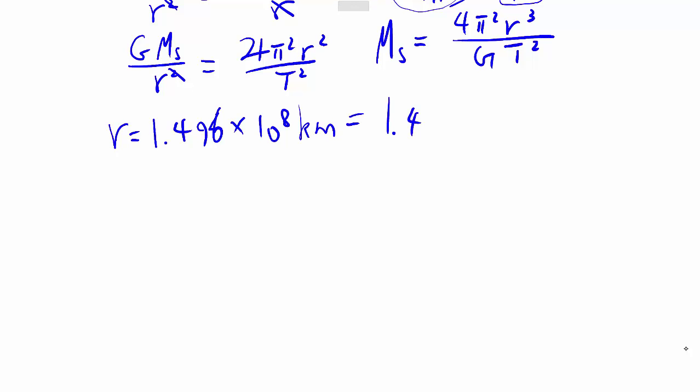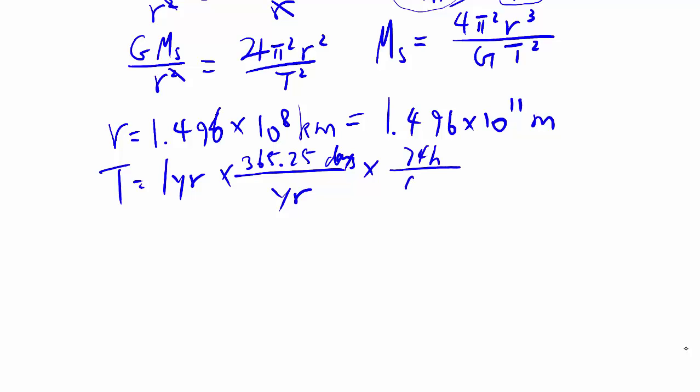Converting it all to meters. So we add three zeros, and then the period is one year, which needs to be converted into seconds. Again, we have 365 and a quarter days.